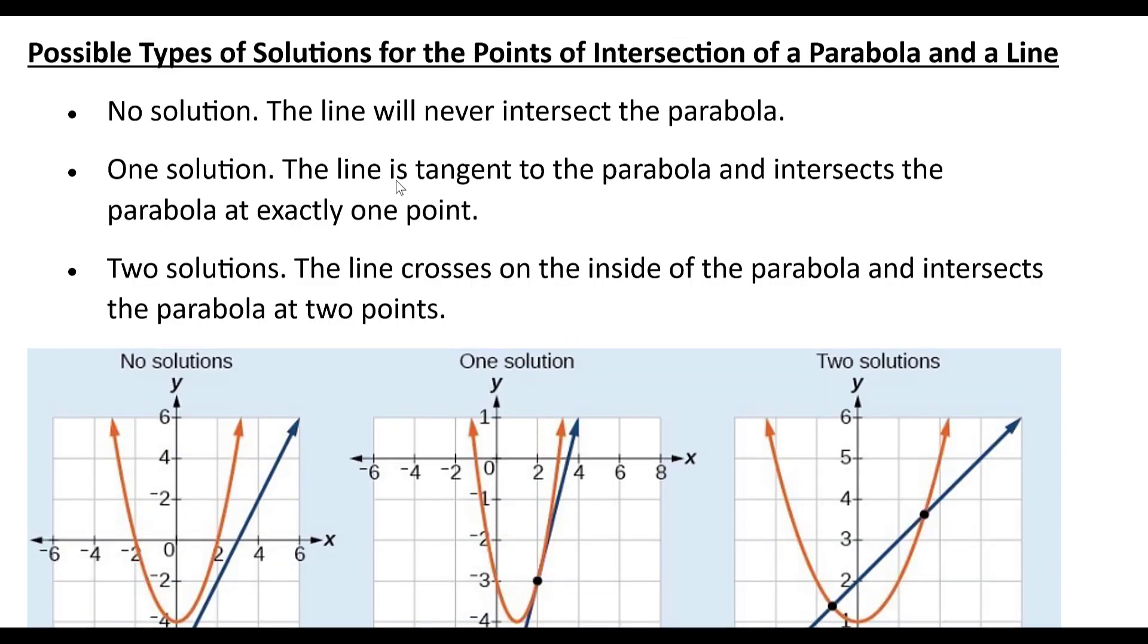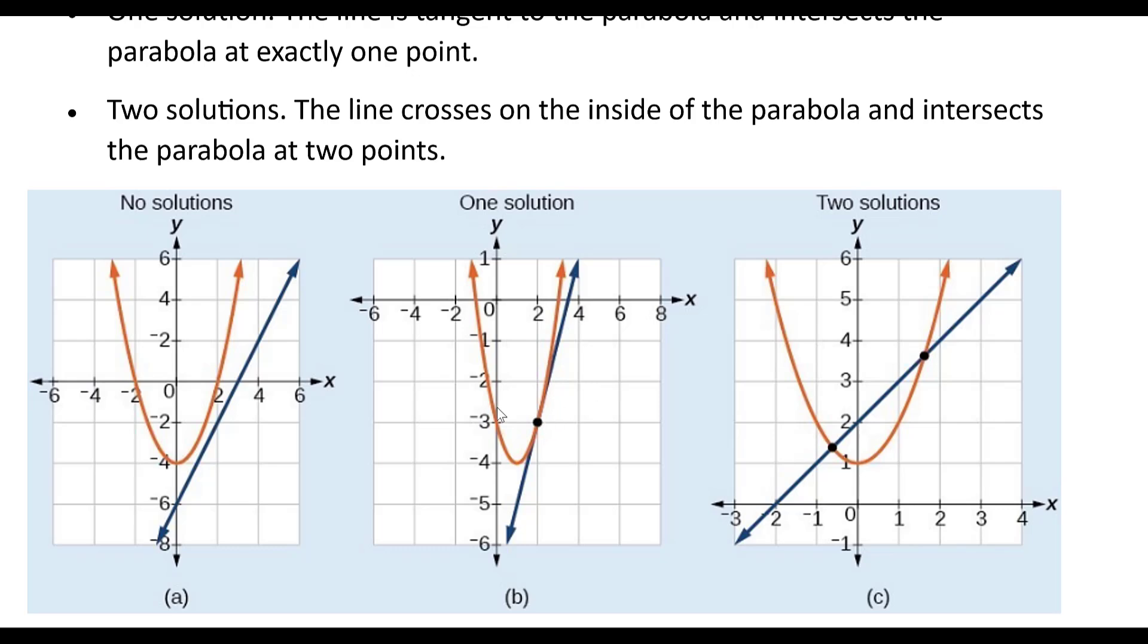You could have one solution where the line is tangent, and tangent means it touches at one place, tangent to the parabola and intersects the parabola exactly at one point. That's this case here.